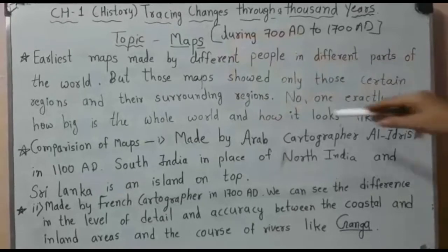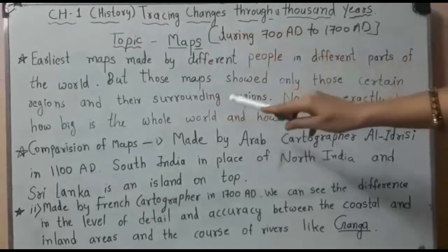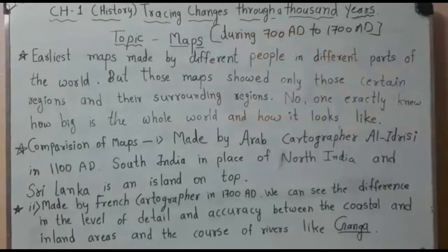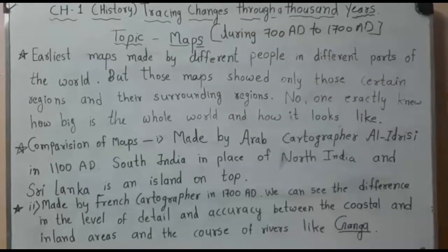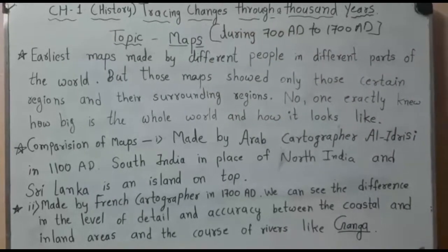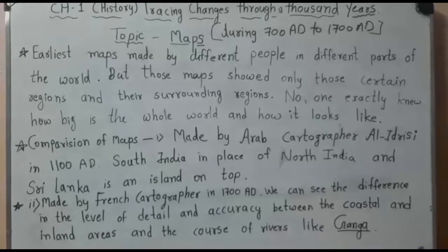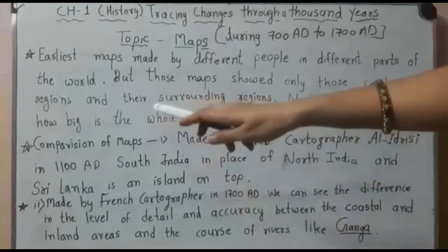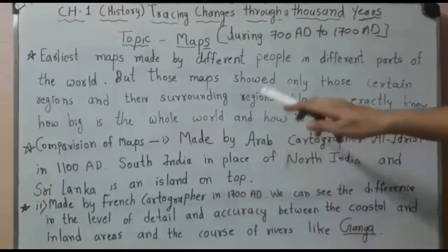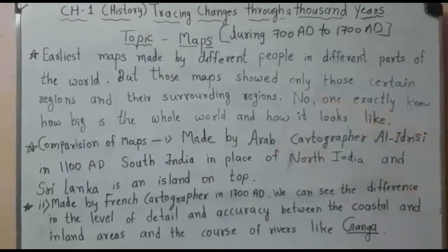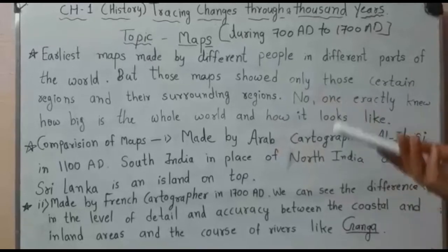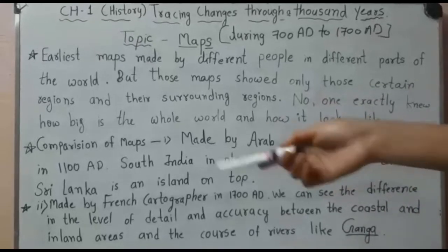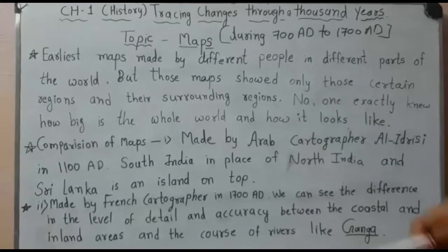Those maps showed only certain regions and their surrounding areas. Whatever was shown was limited to the region where people were residing. We could never exactly know from those maps how big the whole world is, or what its size or shape might be.